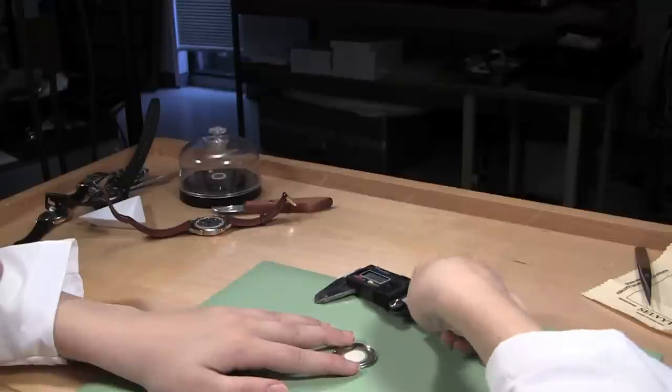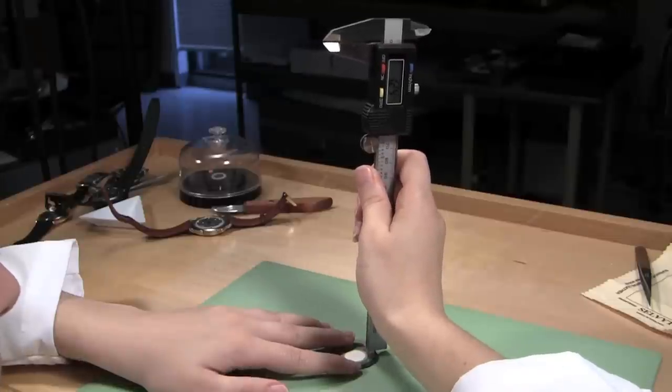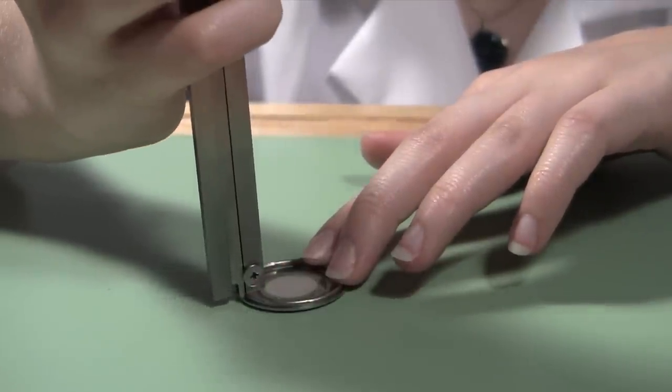Next, you must measure for the thickness of the gasket. Using the opposite end of the digital gauge, measure the depth of the inside lip of the back from the bottom edge to where the gasket should rest.